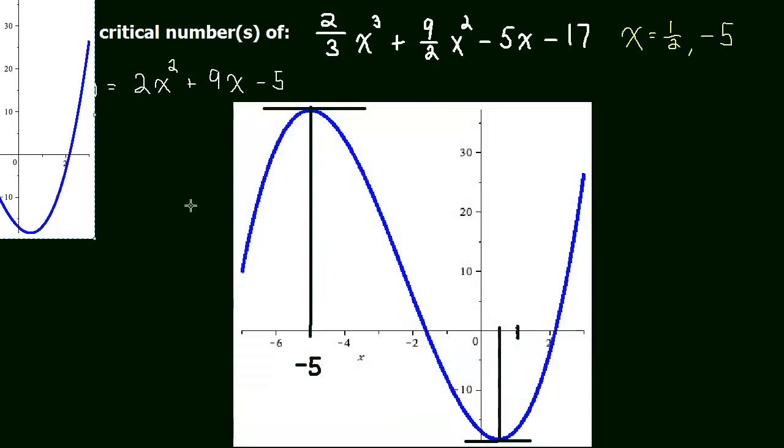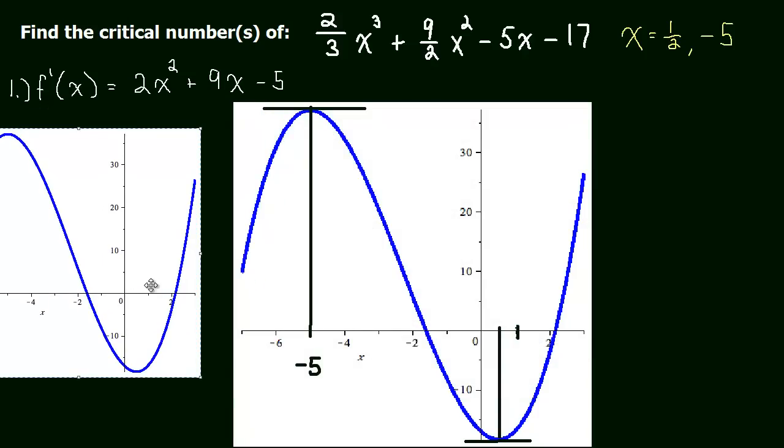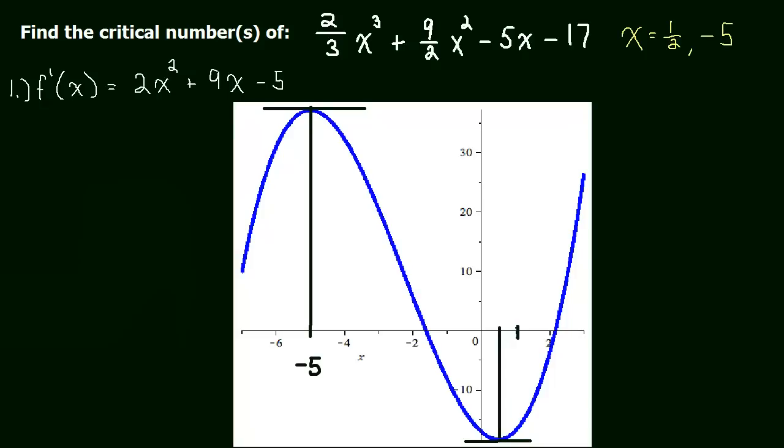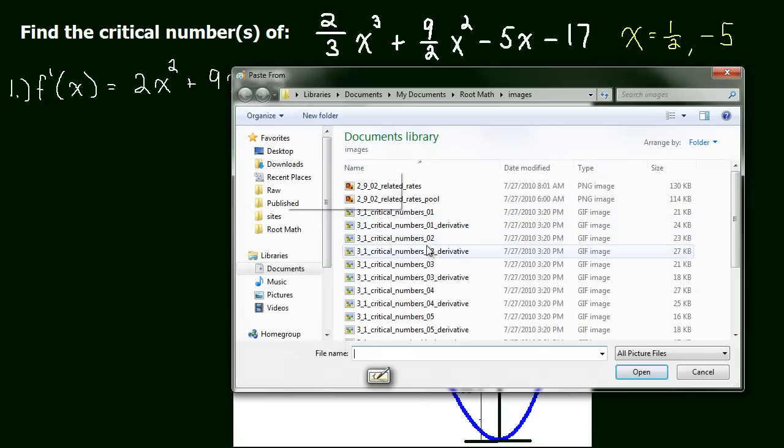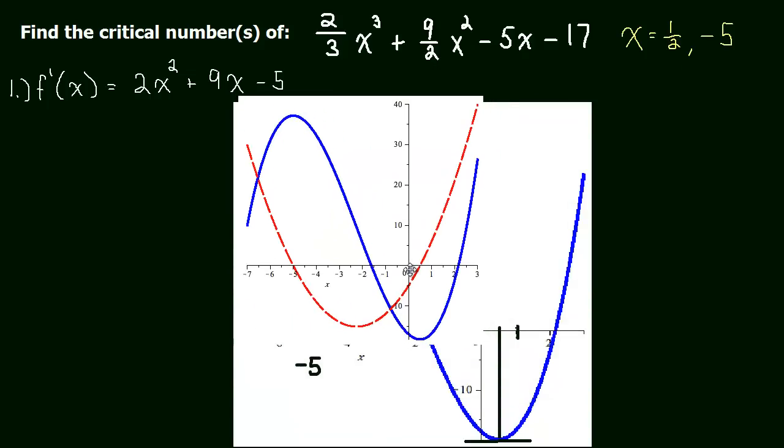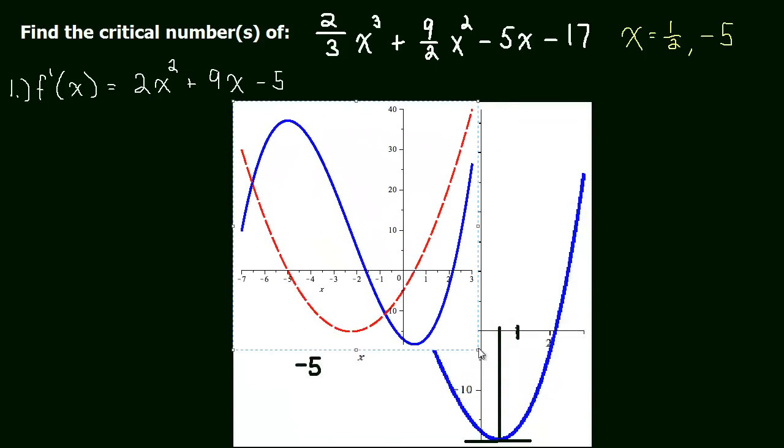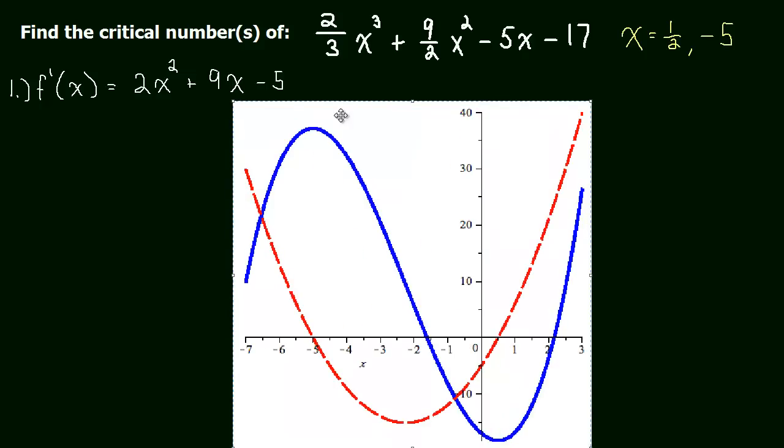Now let me show you. I picked the same graph again. That's not what I wanted to do. There we go. Let me show you the derivative graphed with its, or the function graphed with its derivative. So in blue, we have the same function, and in red, we have the derivative.